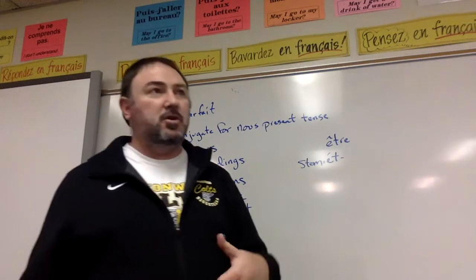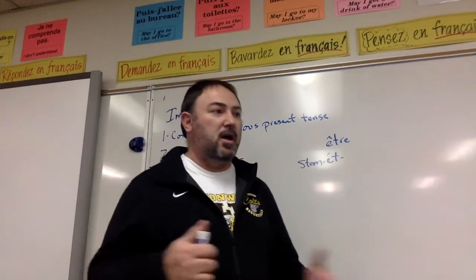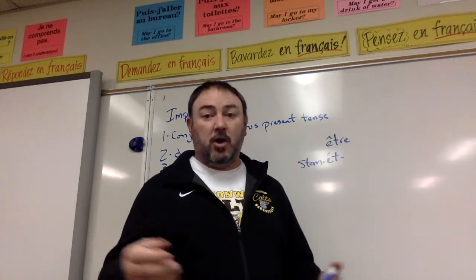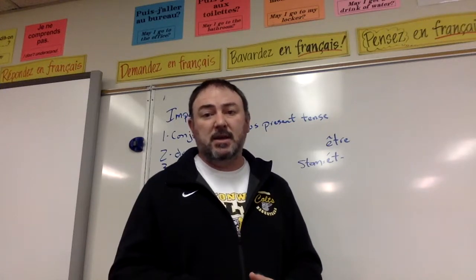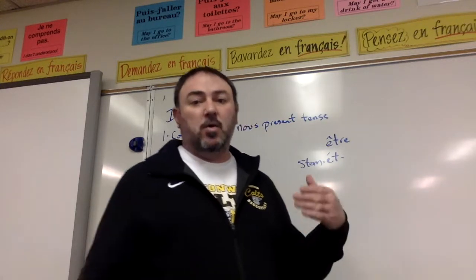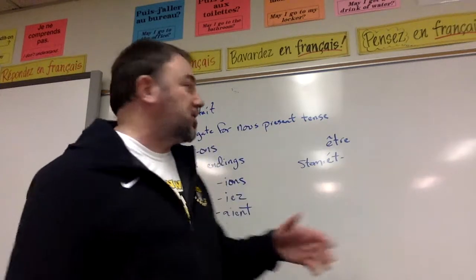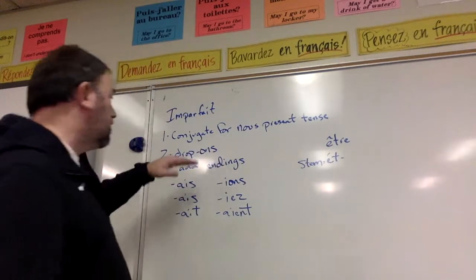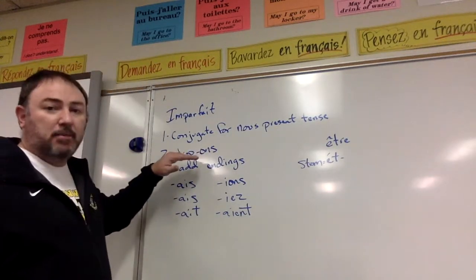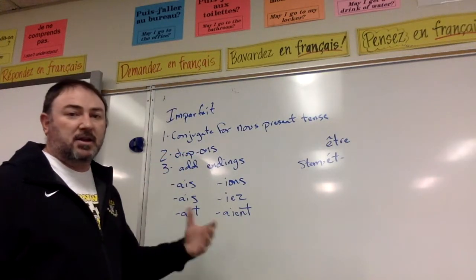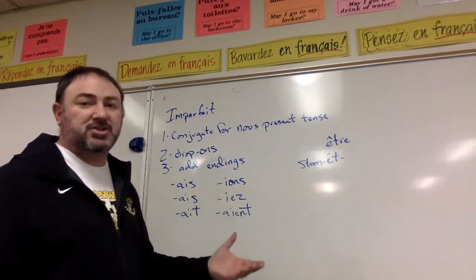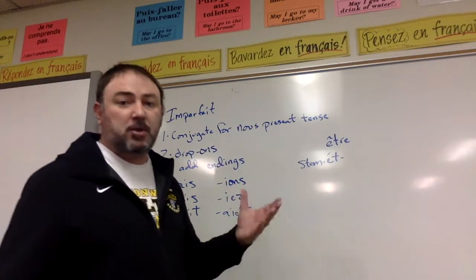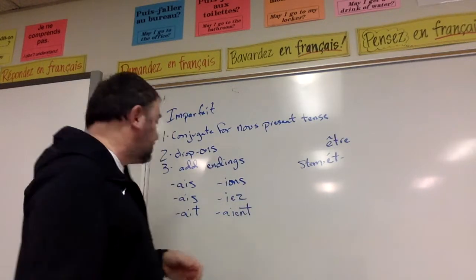Now, usually with verbs, that means you're ending with -ons. So what you do after you conjugate it for nous in the present tense is you drop the -ons on the end of the verb to get your stem. And then once you've got your stem, you add your endings.